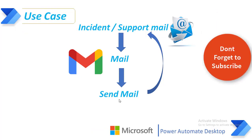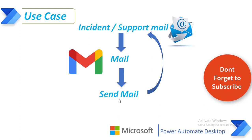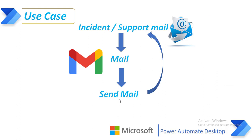Let me show you a small use case to make you understand. In our real-time scenario, the incident team or the support team sends an email reporting that they have raised an incident. The subject contains something like 'incident' or 'support'. We receive the mail for the particular recipient, and after that we need to respond to the support team saying: 'Hi team, we are working on the particular incident and we'll resolve this issue as soon as possible.' That is the mail we are going to send to the support team.